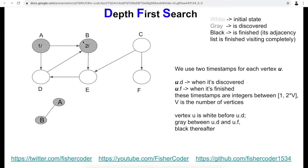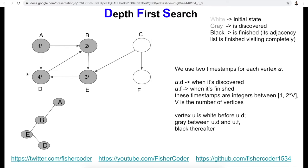Following depth first search, we continue to go even deeper rather than backtracking. We discover d with discovery time four. Now all of a, b, e, d have been marked gray. Is there anything adjacent to d that hasn't been explored? None. We have traversed to the deepest level of this route. That means we have finished with d, so we mark it black. Five is d's finish timestamp.